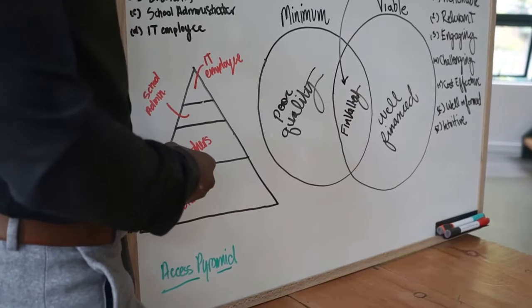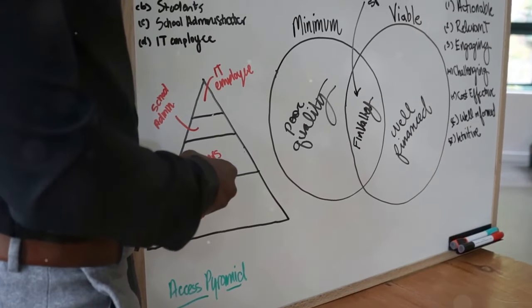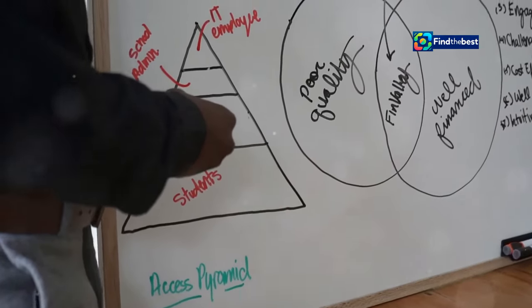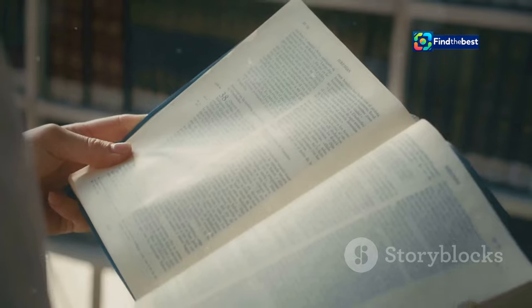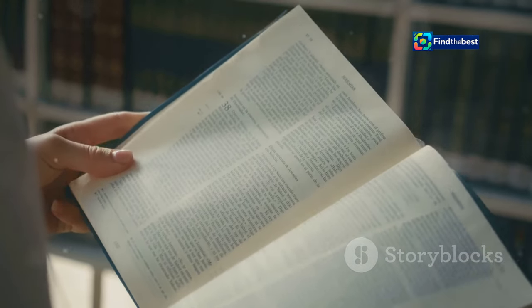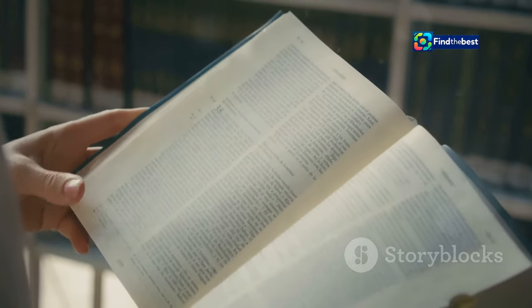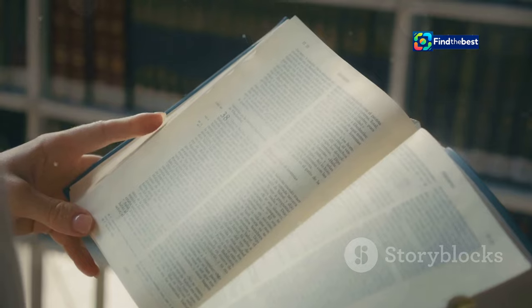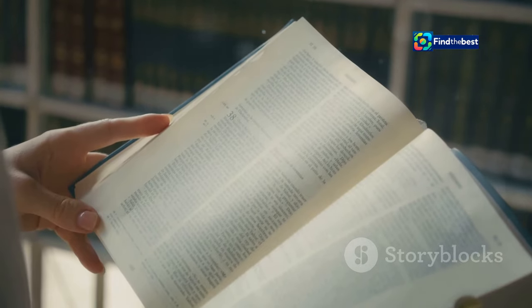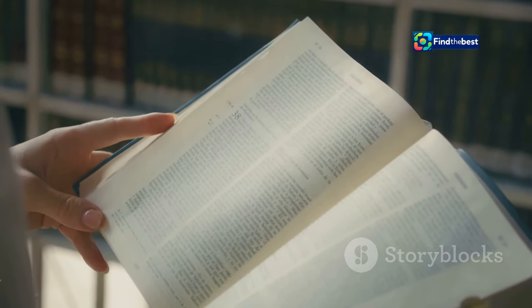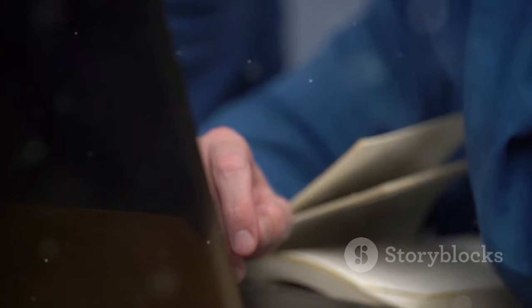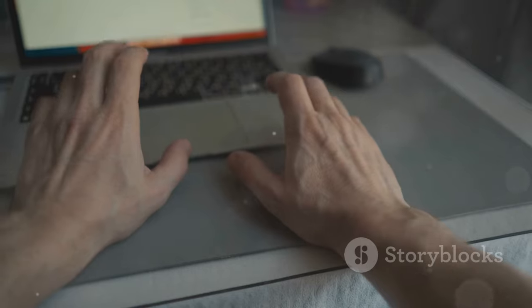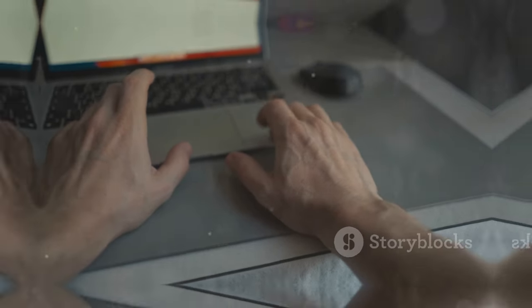Then introduce the main topic of the chapter and outline the key points you'll be covering. Keep it concise and avoid revealing too much detail. You want to pique their curiosity, not spoil the ending. What's your favorite way to transition between chapters in a book? Let me know in the comments.